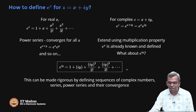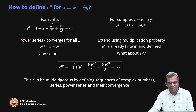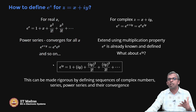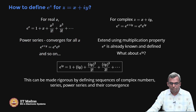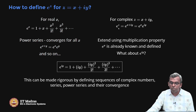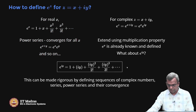Most people find this definition very convenient and comforting: for real x we have e^x, and instead of x we put iy to get a complex number. The critical thing is that while e^x is real, e^(iy) becomes a complex number. Once we have e^(iy), we can compute e^x · e^(iy) to get e^z as a complex number. When z is complex, e^z is defined as a complex number in this fashion.